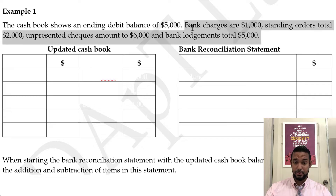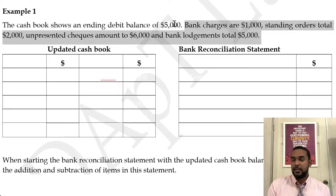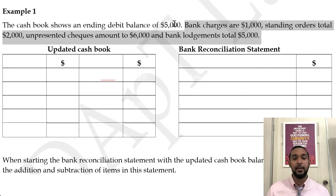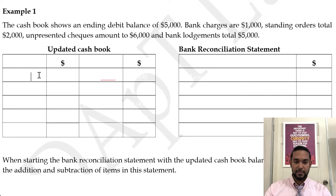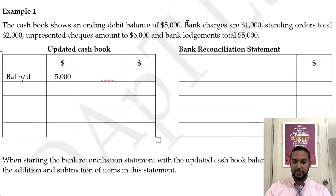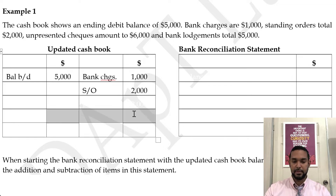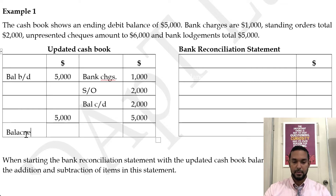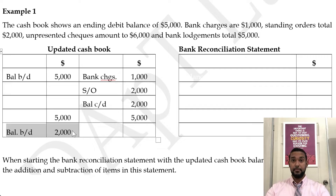What you'll also notice is that there is no bank statement balance given. So what do we do? Well, the first thing is don't let what you don't know how to do interfere with what you know how to do. We can update the cash book, so let's start there. We start by putting in the balance brought down of $5,000. Both bank charges and standing orders are payments — they'll both go on the credit side. This side totals to $3,000, so we need a balance carried down of $2,000. Balance brought down: $2,000. So we have a new updated cash book balance.